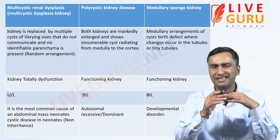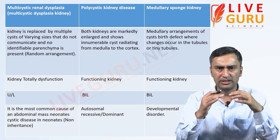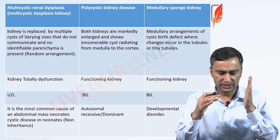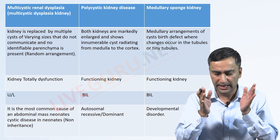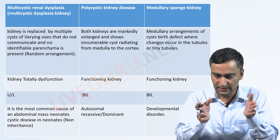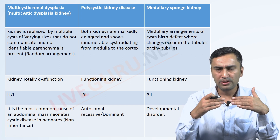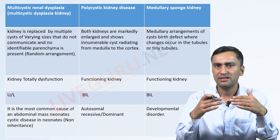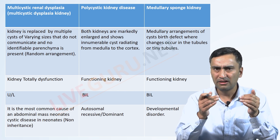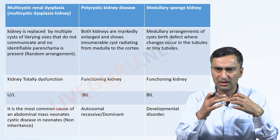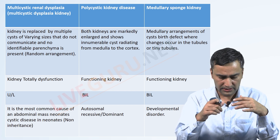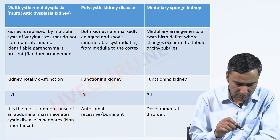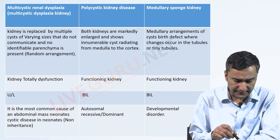Let's talk about three entities which are developmental anomalies: one is multicystic renal dysplasia, another is polycystic kidney disease, and another is medullary sponge kidney disease. In questions they may present clinical vignettes, and by the findings you can differentiate the congenital anomaly. Let's go through the gross and microscopic findings.